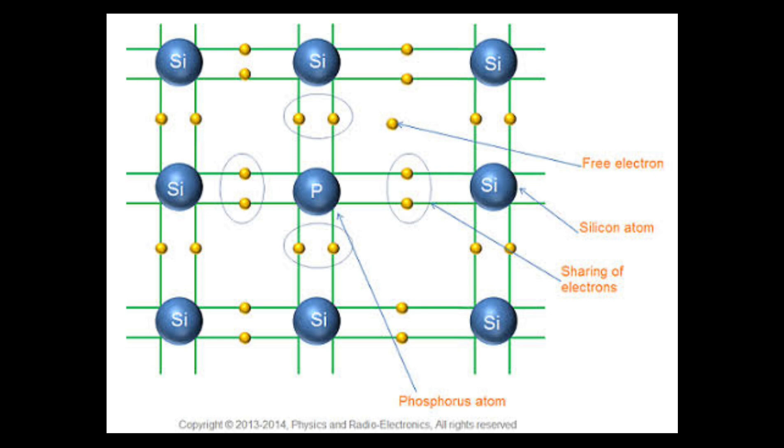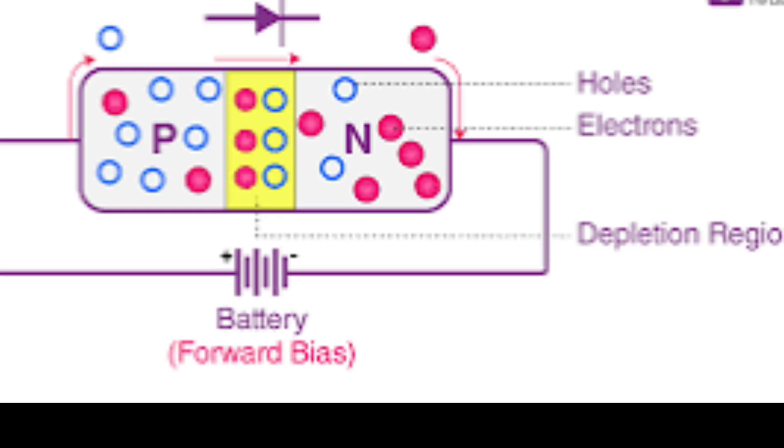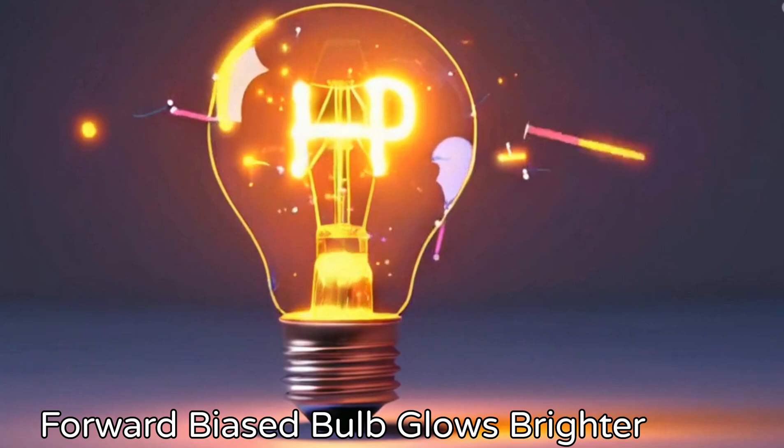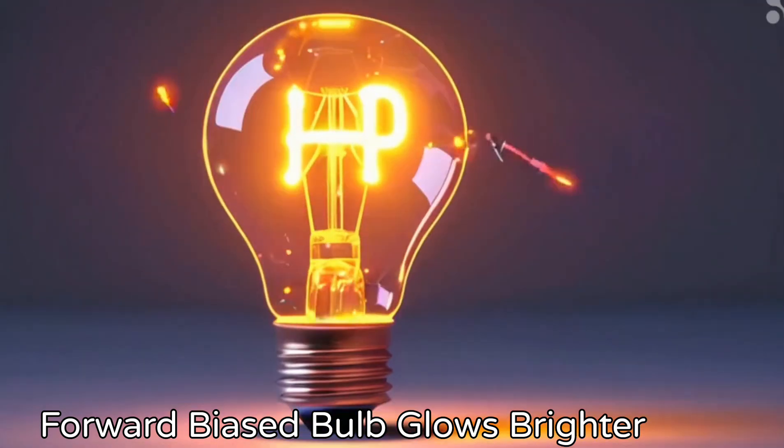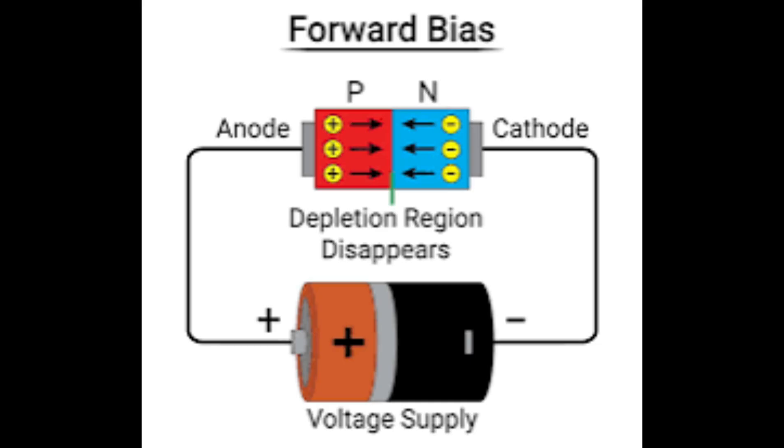When forward biased, the P-type side is connected to the positive terminal of a battery and the N-type side is connected to the negative terminal. This causes electrons to be attracted to the positive terminal and holes to be attracted to the negative terminal. The electrons diffuse from the N-type side to the P-type side and the holes diffuse from the P-type side to the N-type side. These have low resistance. The depletion region is smaller so current can flow very easily through it.